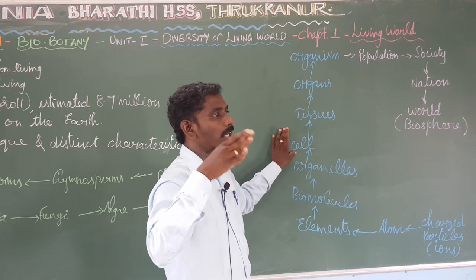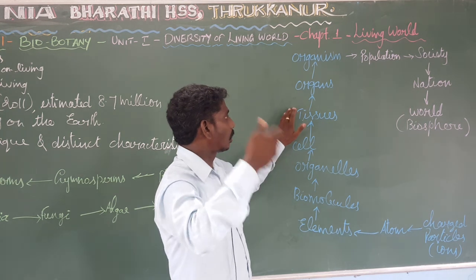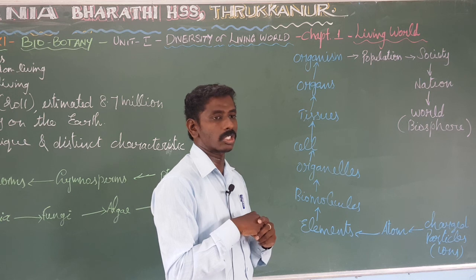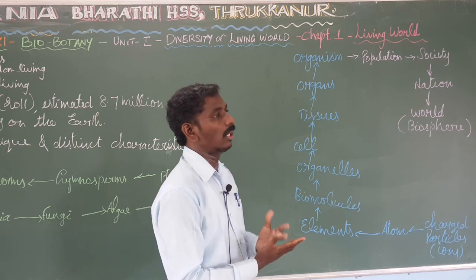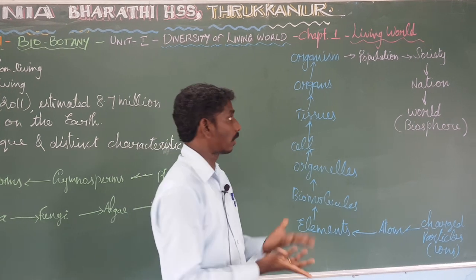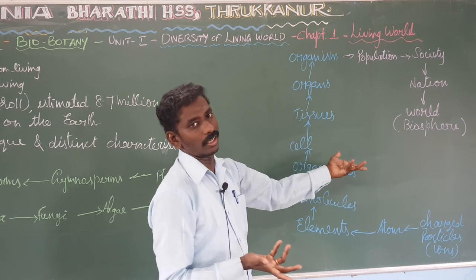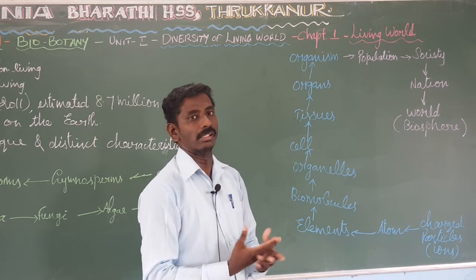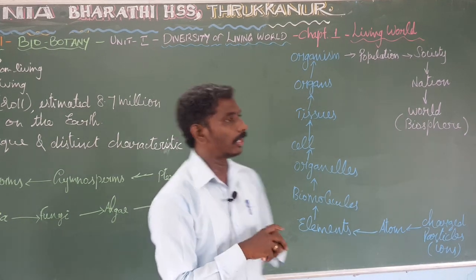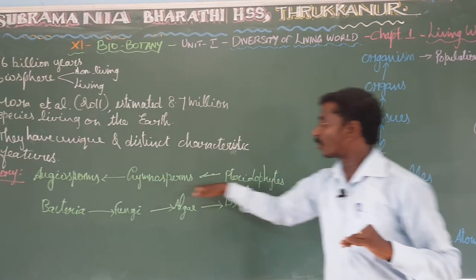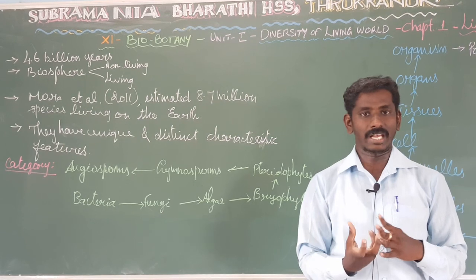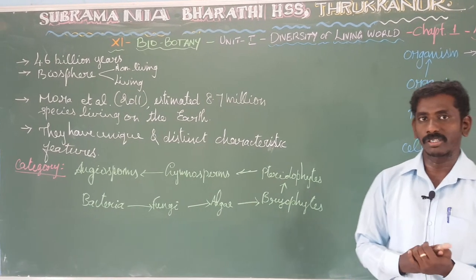The cell is the basic unit of life. Cells form tissues, tissues form organs, and organs form an organism. One organism combined with others in a particular place forms a population. Different populations in one place form a community or society, society forms a nation, nation forms the world, and the world is the biosphere. In the chapter on the Living World, we will learn different categories of organisms, their characteristics and features, modes of nutrition, reproduction, and economic importance.